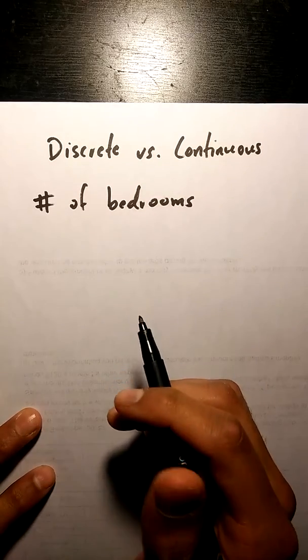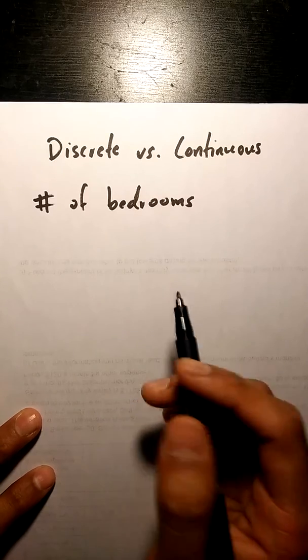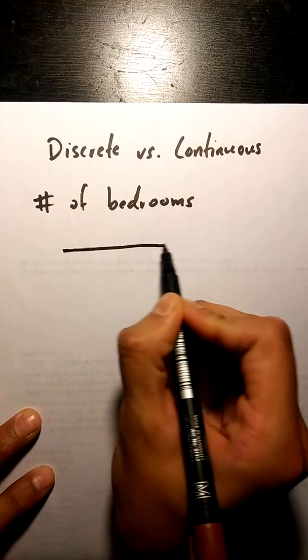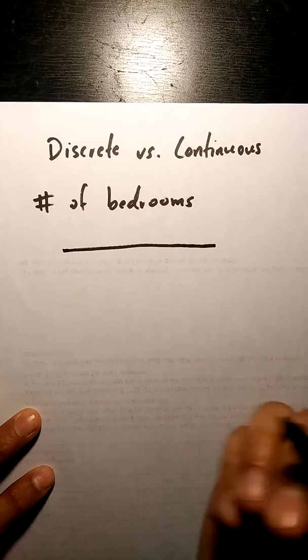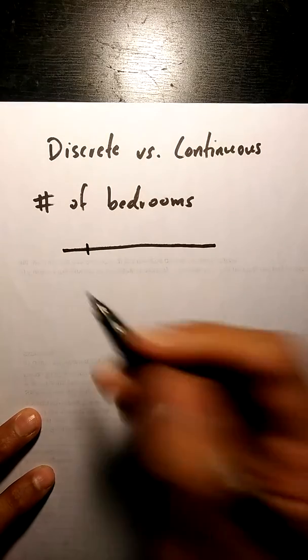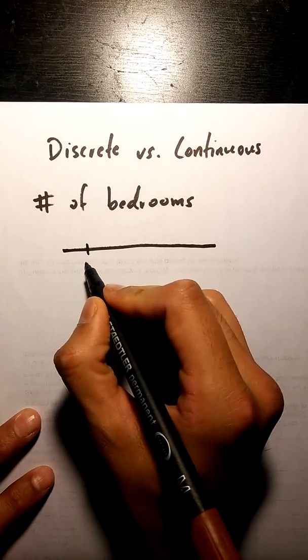If we're talking about the number of bedrooms in a house, what you can do is you can draw a number line and you can pick a random number of bedrooms that you think a house will have, say for example three bedrooms.